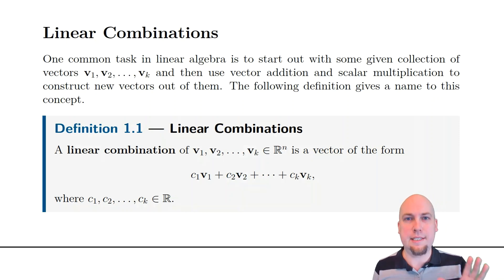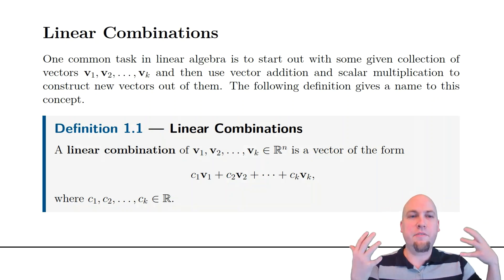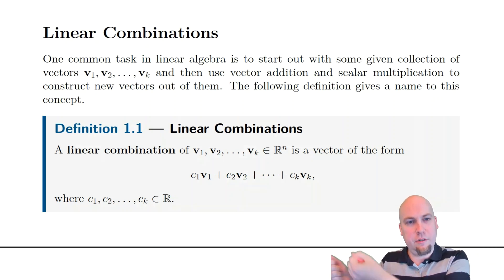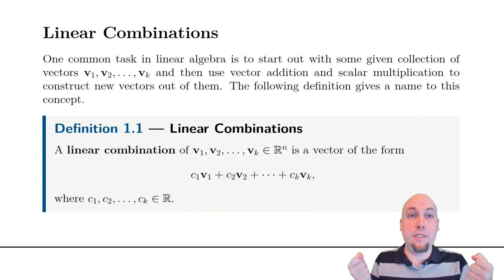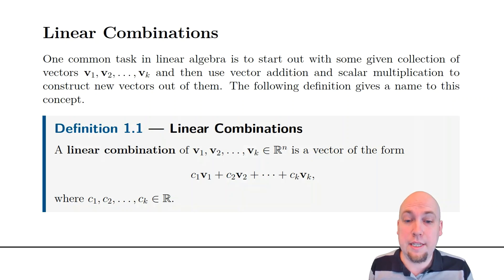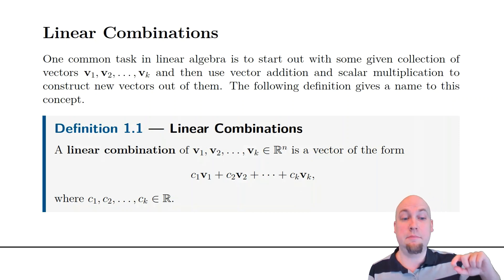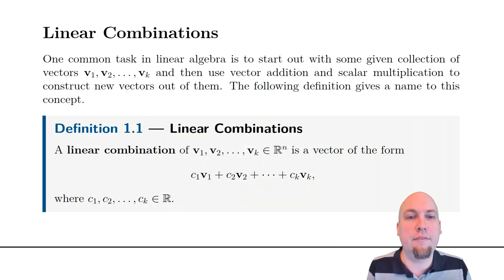So let's look at the precise definition. The setup is we're given k vectors ahead of time — think of them as fixed. Someone comes up to us and gives us v1, v2, all the way up to vk, these k fixed vectors. Any vector that we can build out of these k fixed vectors is called a linear combination of them. So any vector we can get as a result of a scalar multiplication times v1, plus a scalar multiplication times v2, plus a scalar multiplication times vk is called a linear combination of those k vectors.